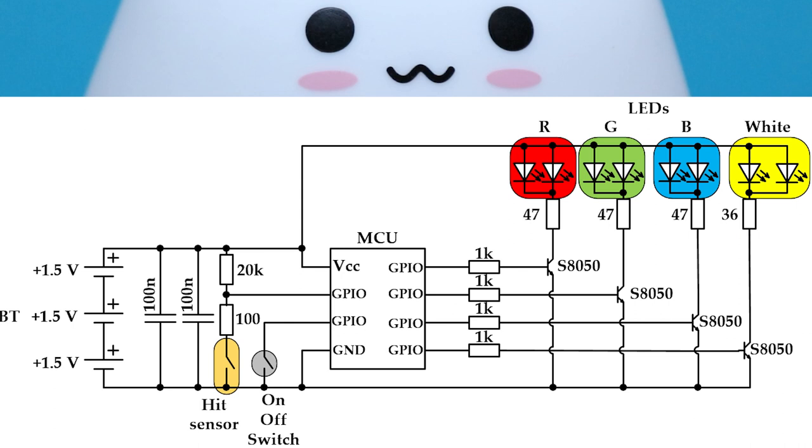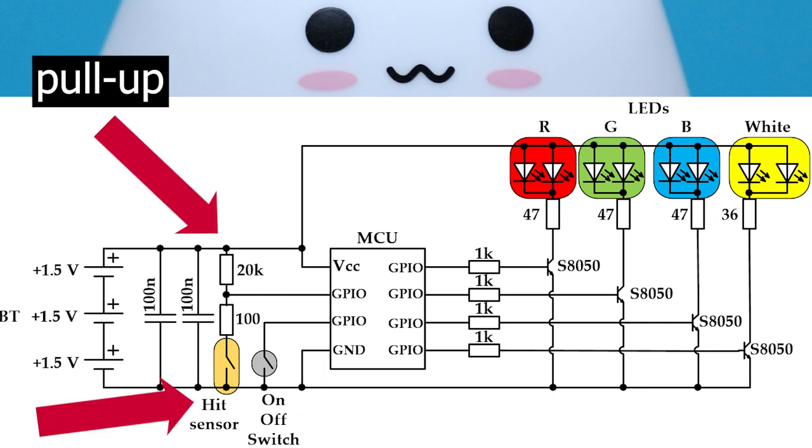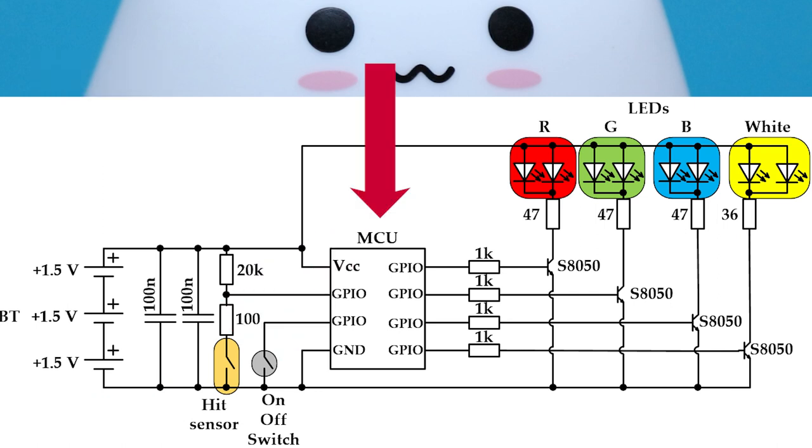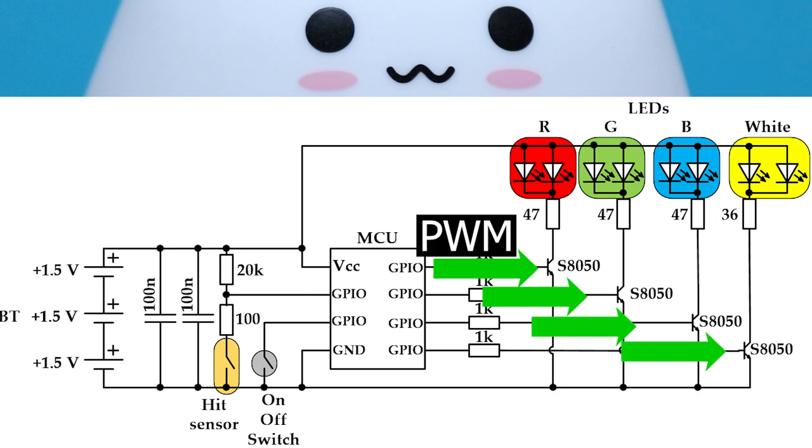As you can see, nothing really complicated happens here. There are three batteries connected in series to power the circuit, two ceramic capacitors close to the power pin of the controller to filter input voltage, here is on-off button, hit sensor with pull-up resistor. All the control, including these two switches states monitoring, is done by the microcontroller. So, MCU as well controls LED brightness, individually of each color. To do so, there are four transistors that are controlled by the PWM signals from the microcontroller.